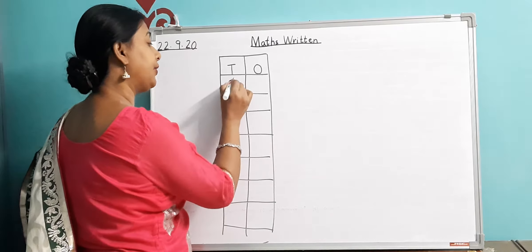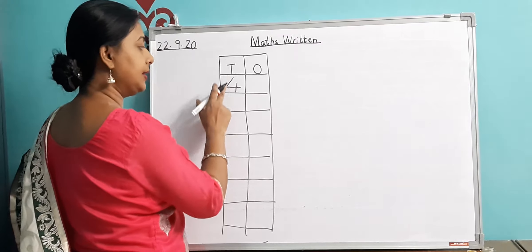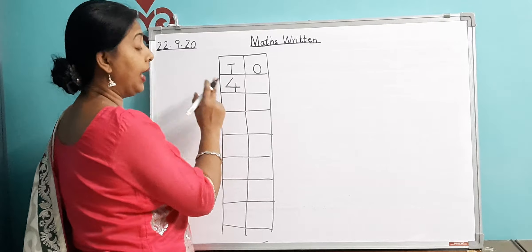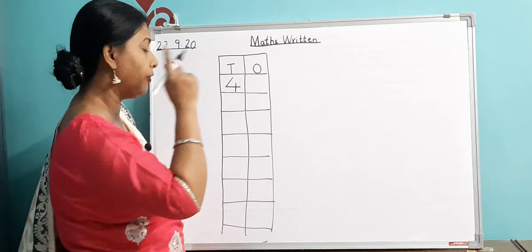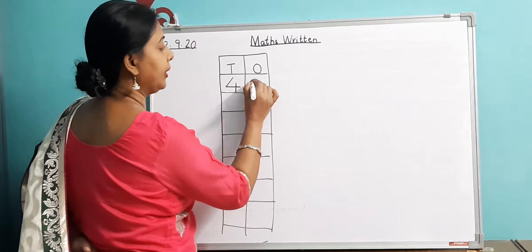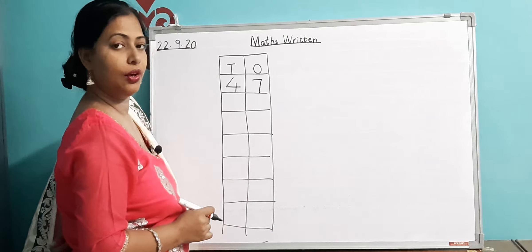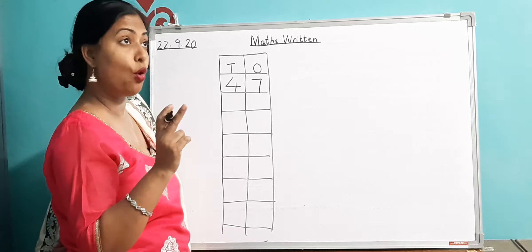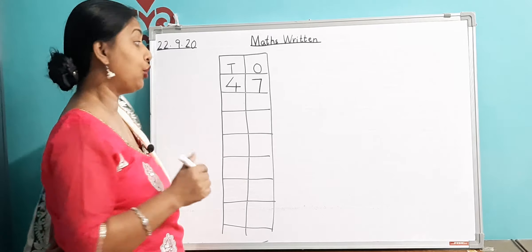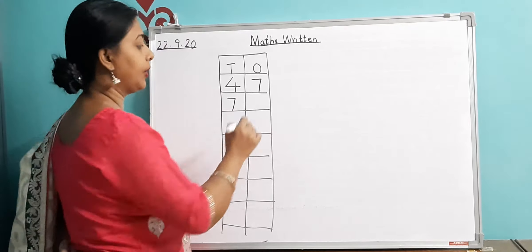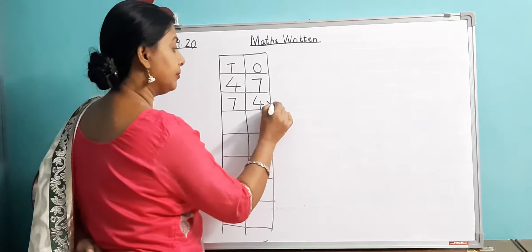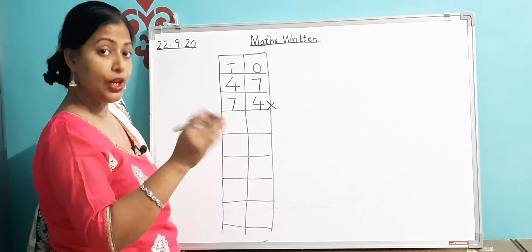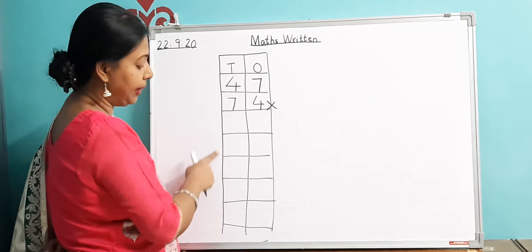You have to write 40 under the Tens column. The 4 of 40 will be under the Tens column, and the next number — I said 47 — so 7 will come over here in the Ones column. Always remember: some children write 7 first. They hear 47 and write 7 first and 4 later — this is wrong. Always remember the tens digit comes first in the Tens column.